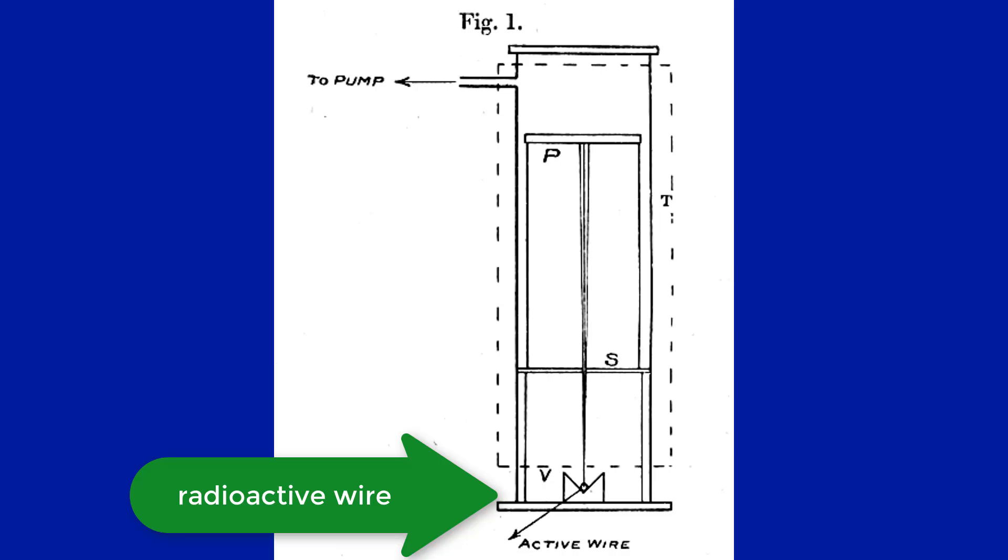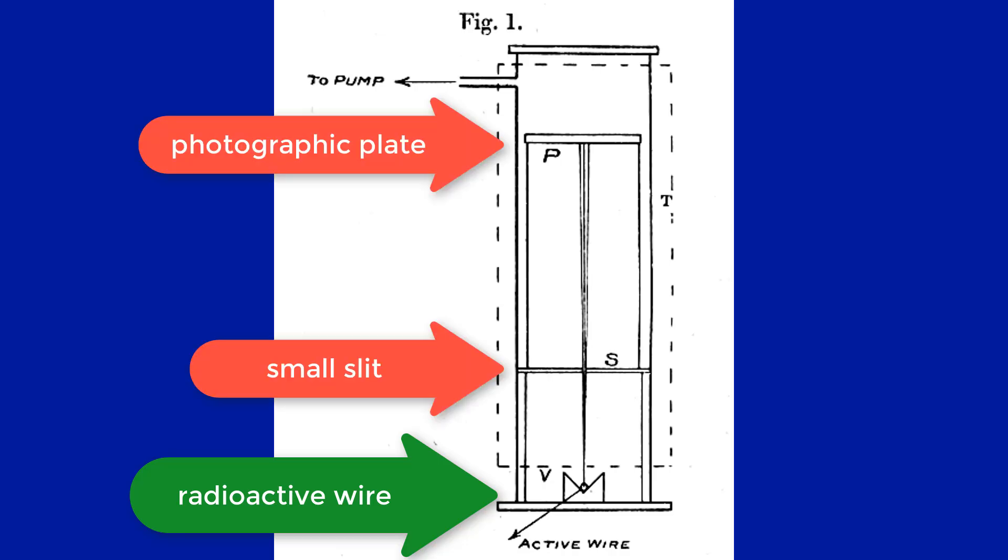In 1906, he published an experimental proof of his theory. Rutherford put a small piece of radioactive wire in a groove and then had the beam of alpha particles from the wire go through a small slit and illuminate a photographic plate. He then covered half the slit with a mica screen. The beam that went through the mica was a little bit more spread out than the beam that didn't, by about 2%.